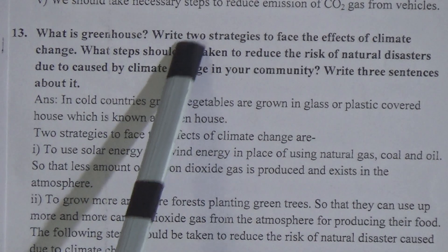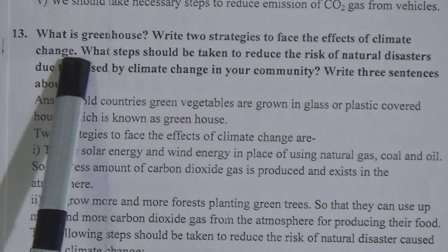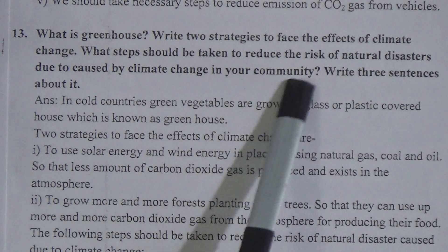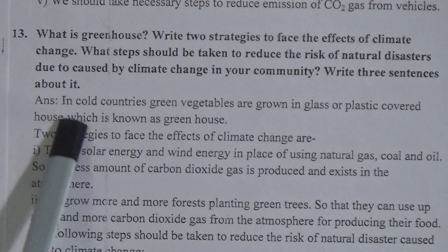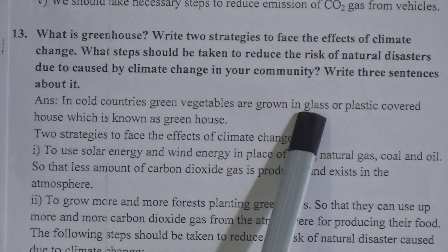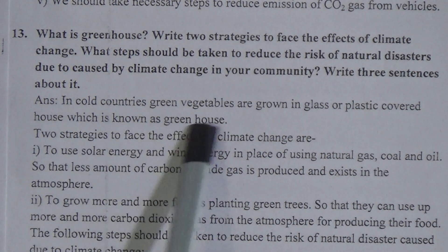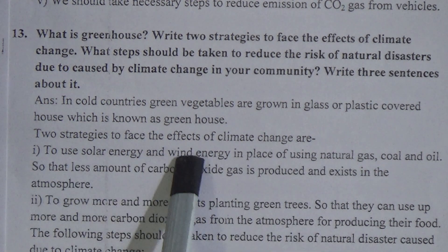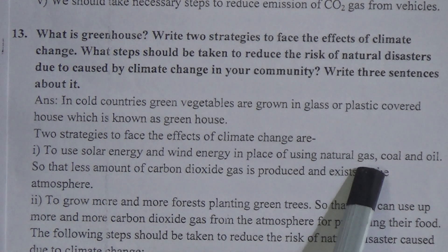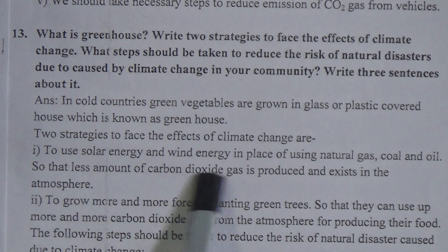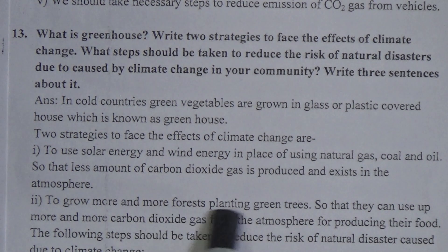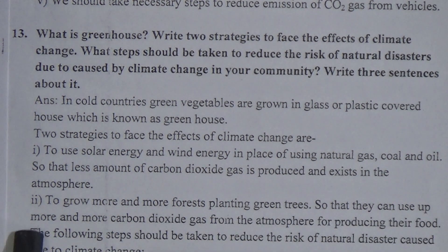What is greenhouse? Write two strategies to face the effects of climate change. The answer is: in cold countries, green vegetables are grown in glass or plastic-covered houses, which are known as greenhouses. Two strategies to face the effects of climate change are: first, to use solar energy and wind energy in place of natural gas, coal and oil, so that less carbon dioxide is produced in the atmosphere; second, to grow more forests by planting green trees so that they can absorb more carbon dioxide from the atmosphere for producing their food.